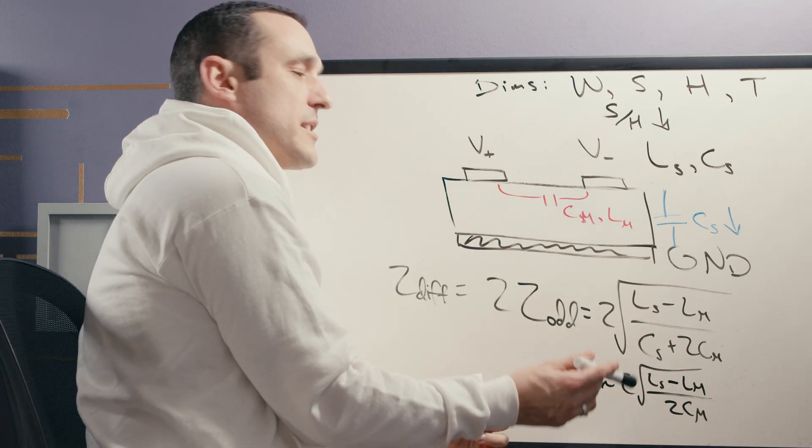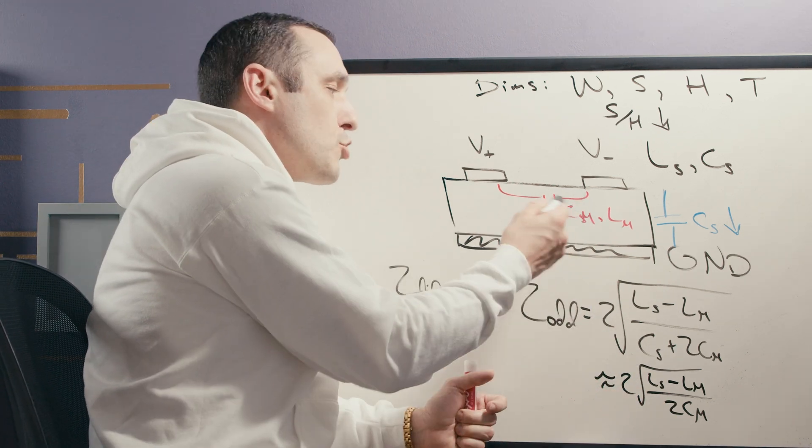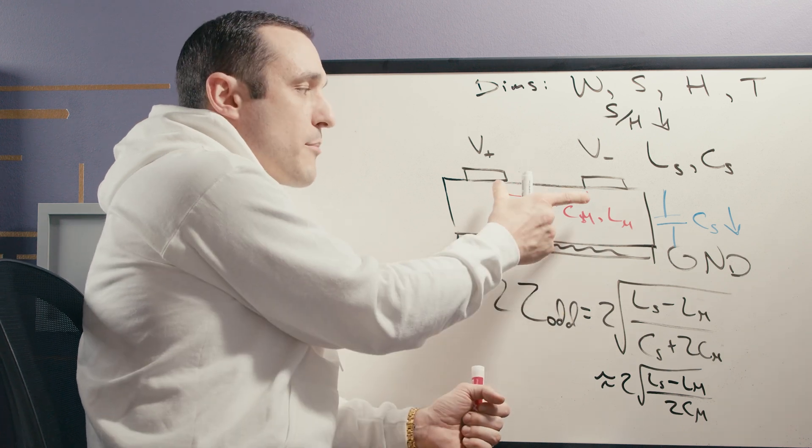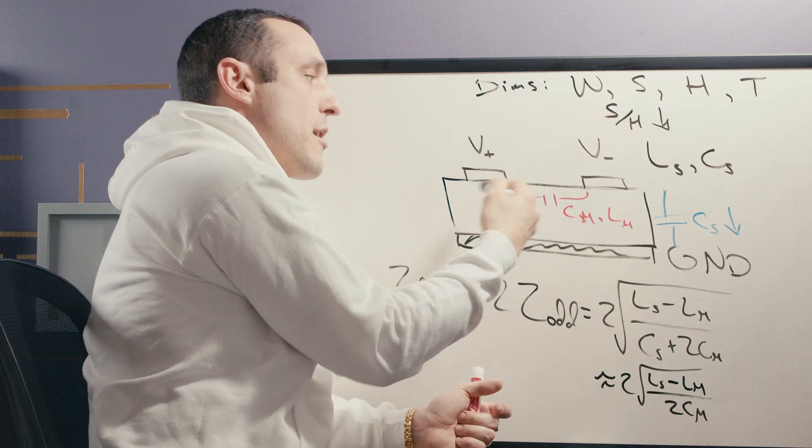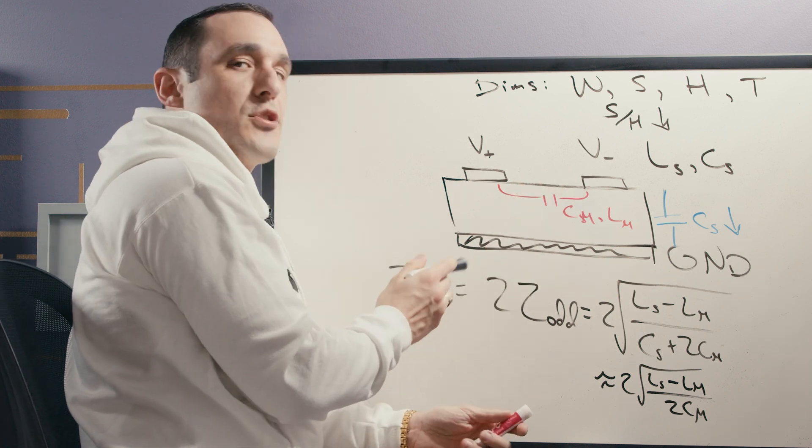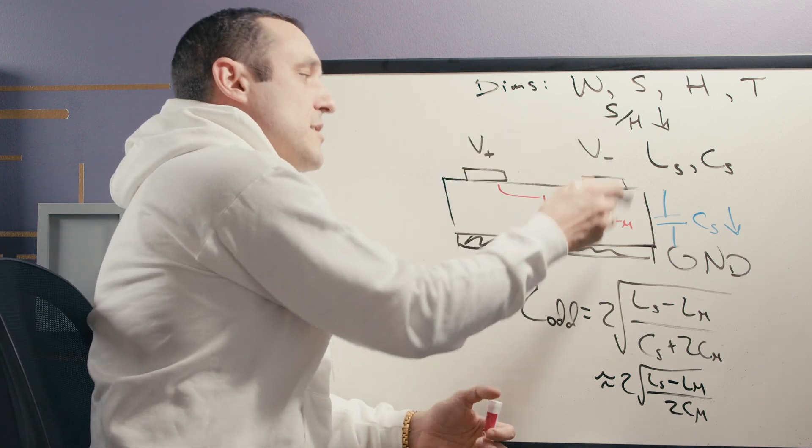Now I only bring up this formula to emphasize the fact that the mutual capacitance starts to dominate between these two traces. And it is the spacing value that will primarily determine the differential impedance of this pair of traces.